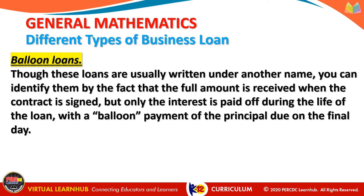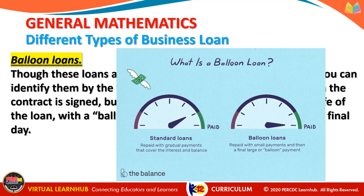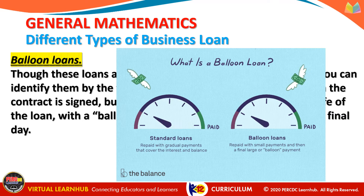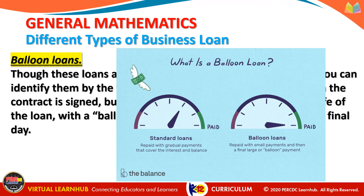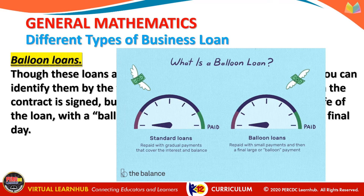With a balloon payment of the principal due on the final date. Comparing a standard loan and a balloon loan: a standard loan is repaid with gradual payments that cover both the interest and balance, while a balloon loan is repaid with small payments and then a final large or balloon payment.